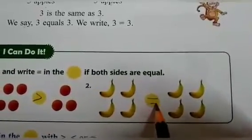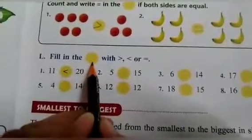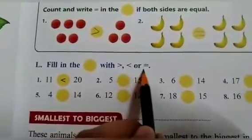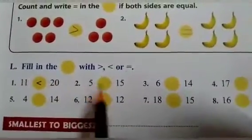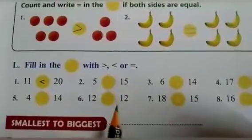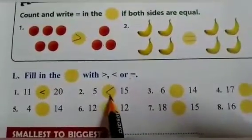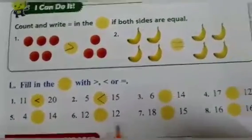Next one, fill in the blanks with greater than, smaller than, or equal to sign. Now five and fifteen, so which is greater? Fifteen. So we will put the sign of greater than, or we can say that the mouth of an alligator will open towards fifteen.